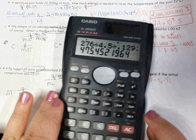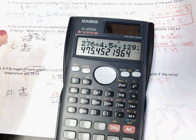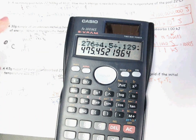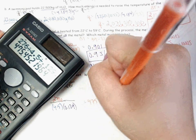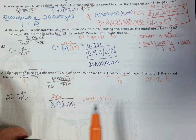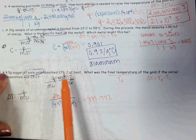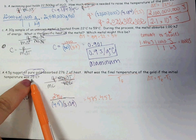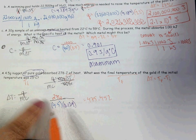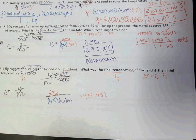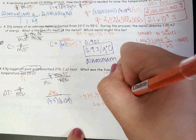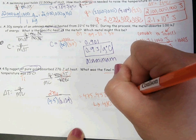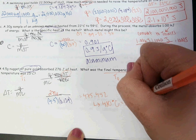That gave me 475.452. As far as significant figures, this one has two significant figures, this has three significant figures, two significant figures. There's nothing I used with just one. So my lowest number of sig figs would be two, and I would round this to 480. So that is my delta T.